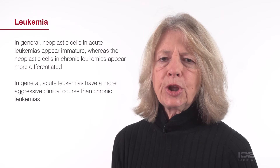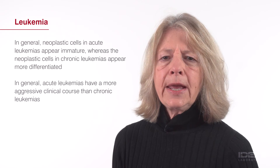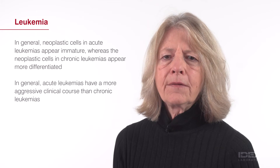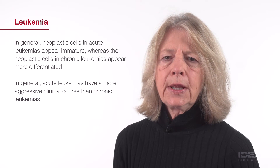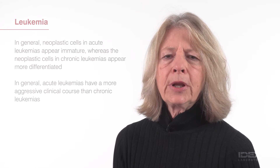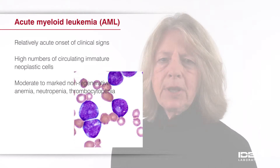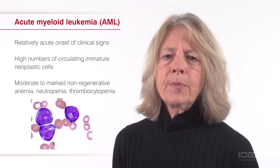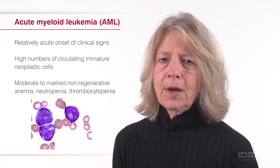Dogs and cats with acute myeloid leukemia, or AML, frequently have a relatively acute onset of variable clinical signs. Typically, there are high numbers of circulating neoplastic cells that appear immature, based on their large size, basophilic cytoplasm, fine chromatin, and prominent nucleoli. Moderate to marked non-regenerative anemia, neutropenia, thrombocytopenia, or some combination of cytopenias is relatively common.